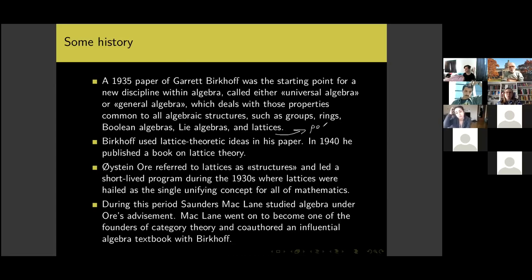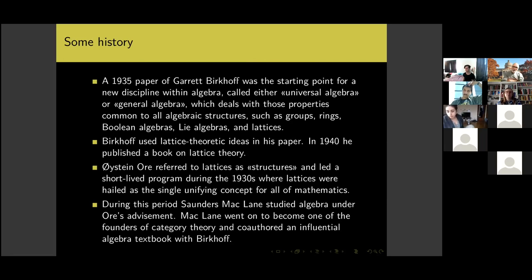A lattice in this sense is a poset in which every pair of elements has a greatest lower bound and a least upper bound, and those are unique. So the real numbers form a lattice under the usual ordering, as do all partitions of finite sets under the usual ordering.